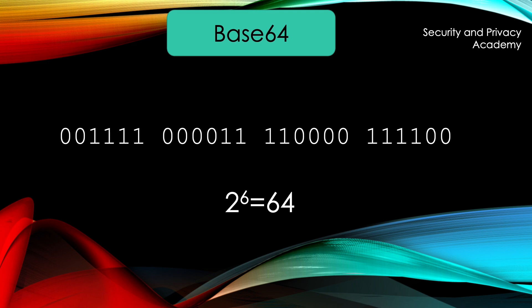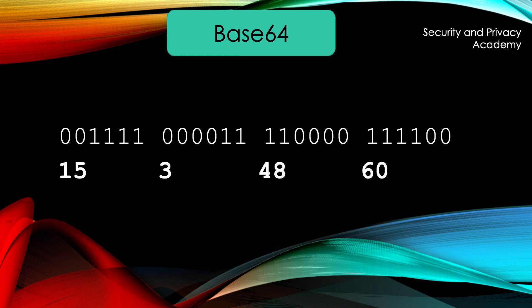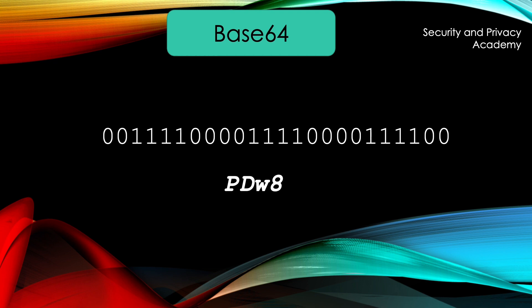The table you can see here shows the mapping of the bit and decimal values to ASCII characters. The decimal values of the 4 6-bit words are 15, 3, 48, and 60. Using the mapping as defined by the protocol, we get the ASCII characters P, D, W, and 8. The Base64 encoding of this bit string is therefore P, D, W, and 8.